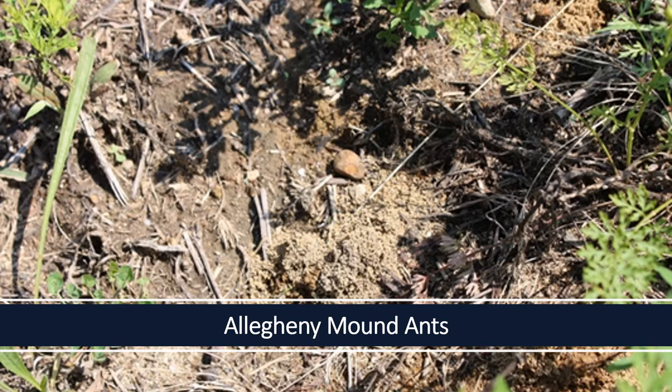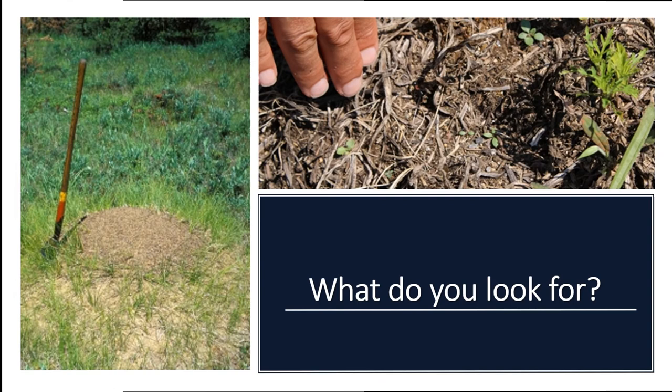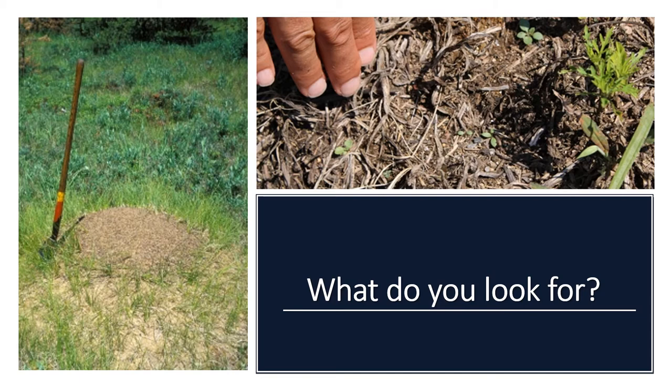Allegheny mound ants can be major pests in Christmas tree plantations. These ants are non-discriminatory and will kill all vegetation within 20 feet of their mound or nests, including seedling or sapling conifers. You want to look for clumps of dead and dying trees, symptoms of injury around the base of the tree, checking for small blister-like swellings, and look for the mounds. Both workers and queens have a reddish-orange head and thorax and a black abdomen and legs. Workers vary in size from 3 to 6 millimeters long, while queens are much larger, ranging between 9 and 12 millimeters.